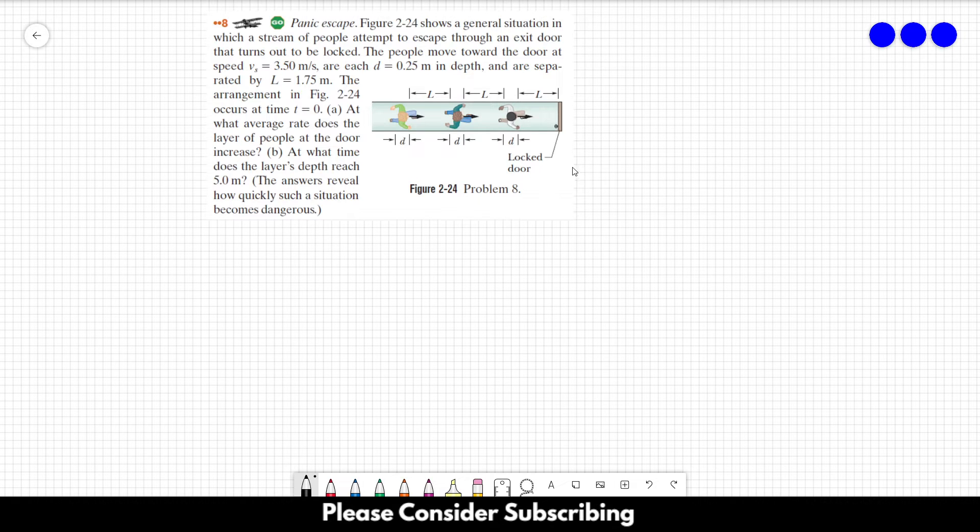The arrangement in figure 2.24 occurs at time t equal to 0. Letter A, at what average rate does the layer of people at the door increase? Letter B, at what time does the layer's depth reach 5 meters? The answers reveal how quickly such situations become dangerous.